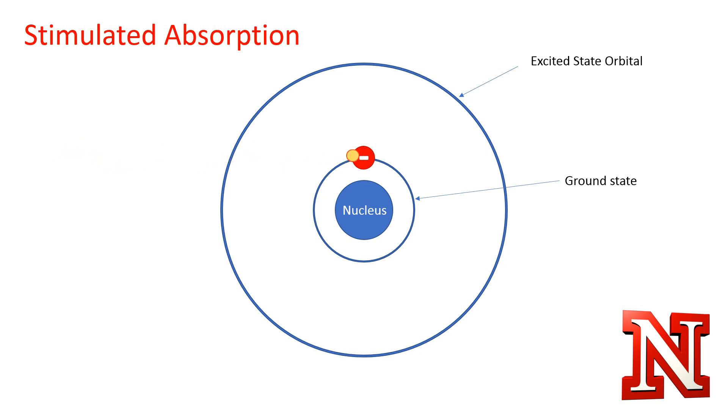When a photon contacts an electron in its ground state, it can excite the electron to a higher energy level. This process is called stimulated absorption. The energy from the photon has now transferred to the electron.